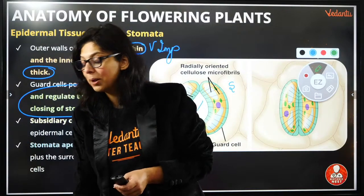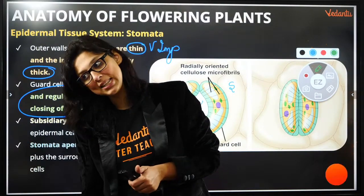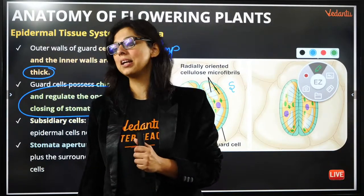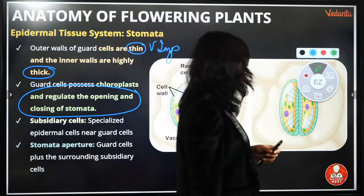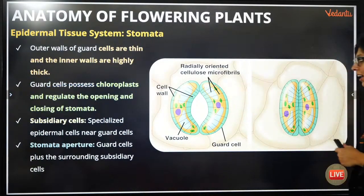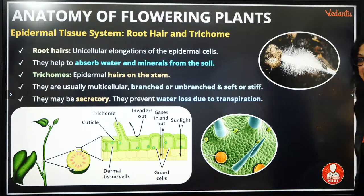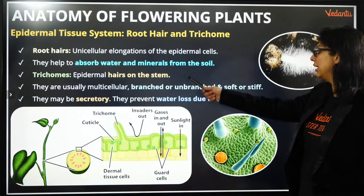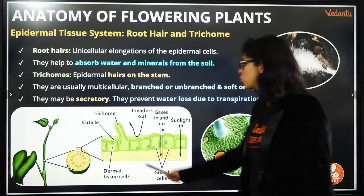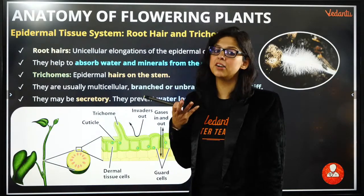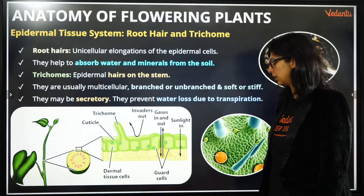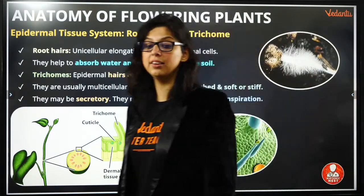Root hair cells are unicellular and help absorb water and minerals from the soil. Epidermal hair on the stem are referred to as trichomes — young stems always have more epidermal hair. Trichomes can be multicellular, unbranched, stiff, and some epidermal hair are secretory. They prevent water loss due to transpiration.